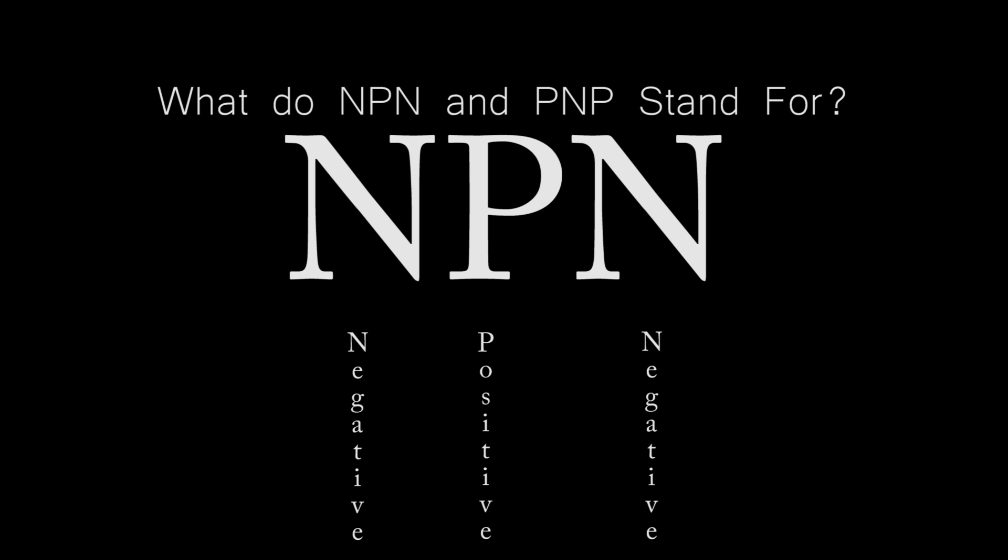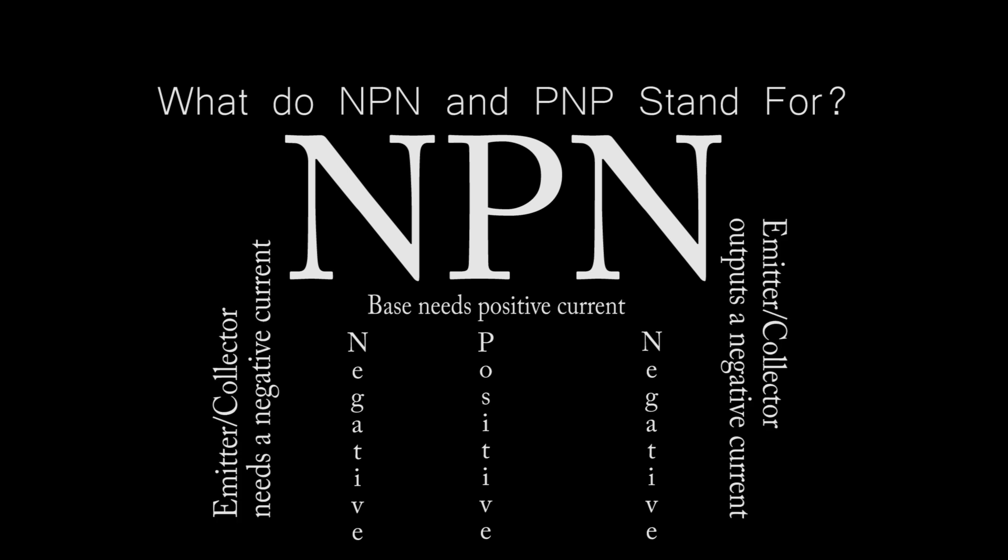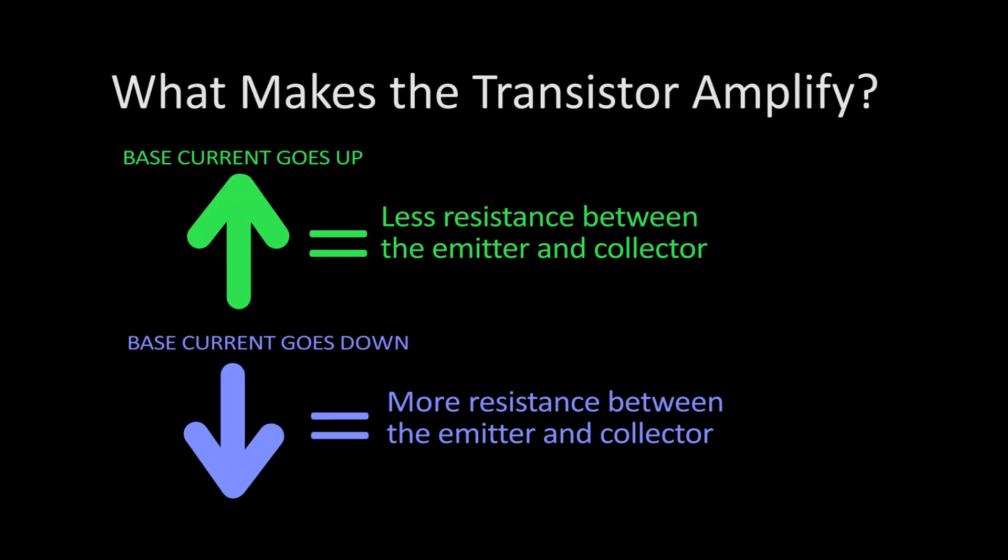This means that the base current is positive, while the collector current needs to be negative, and it outputs a negative emitter current. A transistor amplifies essentially because as the base current goes up, the resistance between the emitter and the collector goes down. And as the base current goes down, the resistance between the emitter and the collector goes up.